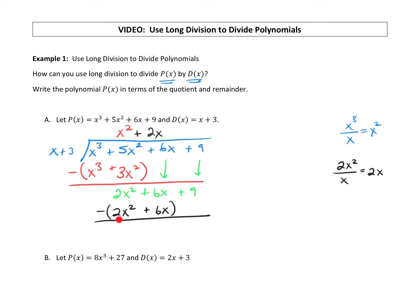We throw parentheses around it and subtract. The 2x² terms cancel — they subtract to zero. Then 6x minus 6x also leaves us with zero. So we just have that 9 to carry down, and when we carry down the 9, that's going to be our remainder.